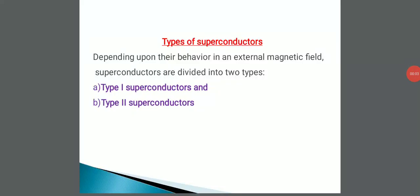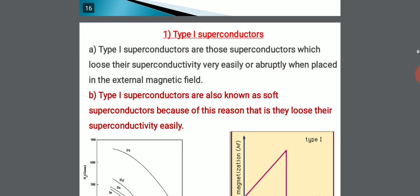What are the different types of superconductors? Depending upon their behavior in an external magnetic field, superconductors are classified into two types: type 1 superconductors and type 2 superconductors.